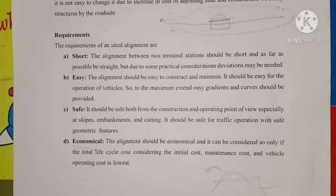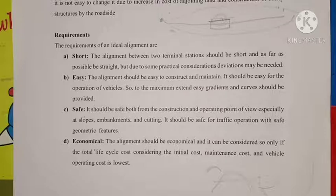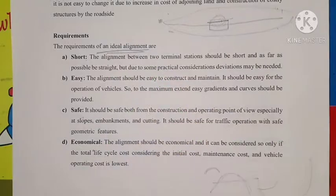The alignment should be safe — safe for both construction and operation. It should also be economical. The total life cycle cost, including initial cost, maintenance cost, vehicle cost, operation cost, and construction cost, should all be at their lowest. These are the four ideal requirements of highway alignment: short, easy, safe, and economical.